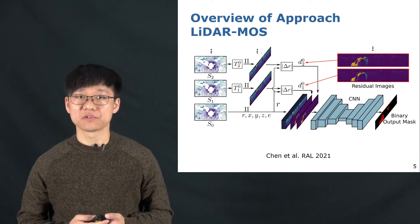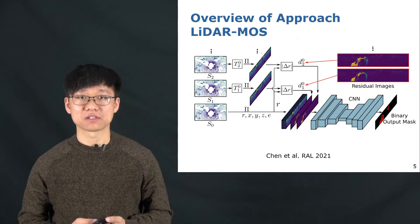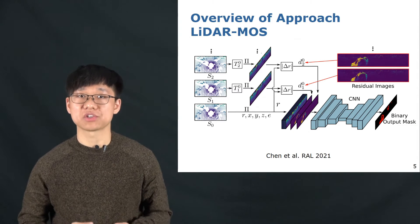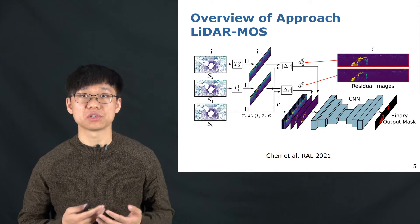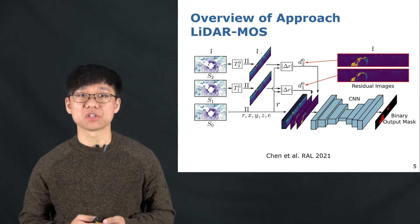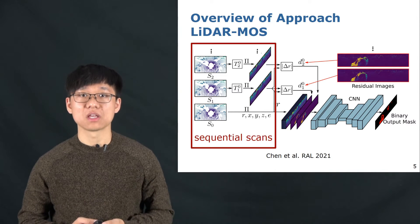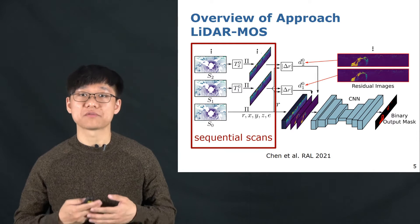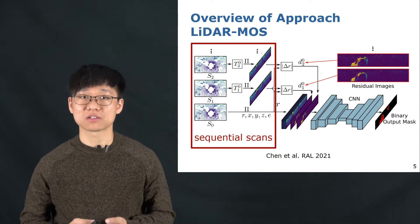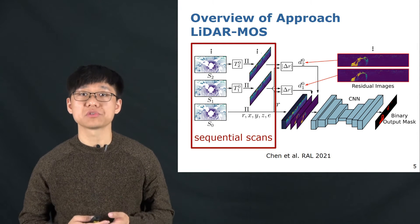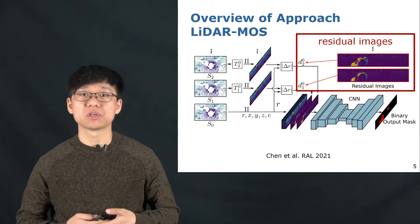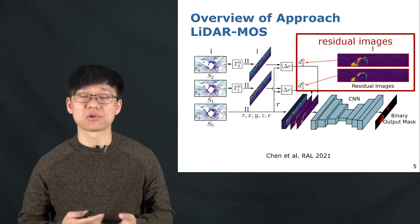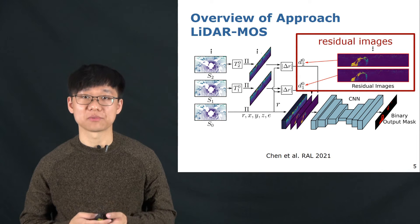This is the overview of our methods. We used the range projection-based representation of LiDAR scans to achieve online moving object segmentation. Given the current scan and the sequence of scans in the past, we generate residual images between the previous scans and the current scan to explore the temporal information.